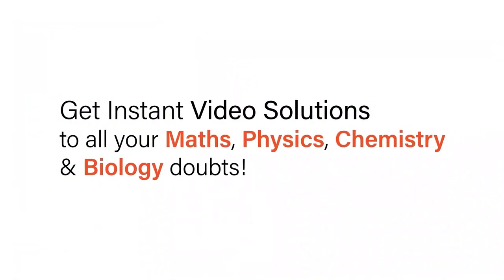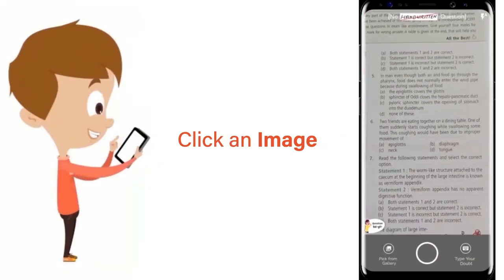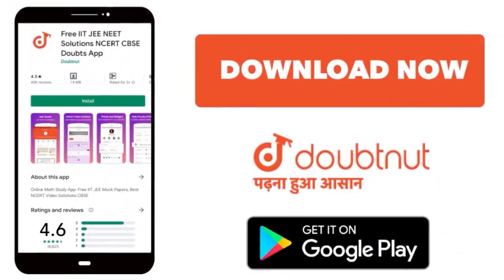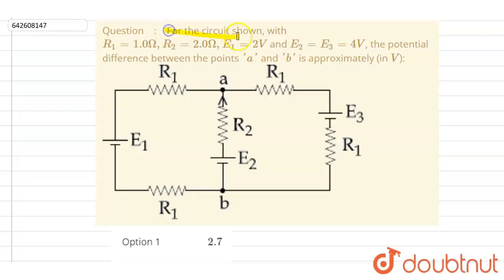With Doubtnet, get instant video solutions to all your math, physics, chemistry, and biology doubts. Just click the image of the question, crop the question, and get instant video solution. Download Doubtnet app today. Hello everyone, for the circuit shown, R1, R2, E1, and E2 are given. You have to find the potential difference between point A and B.